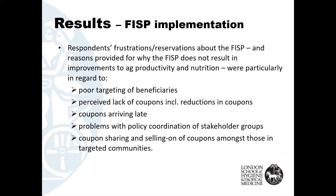Problems with FISP implementation particularly concerned the poor targeting of beneficiaries, a perceived lack of coupons including reductions in their number over time, coupons arriving late, and problems with policy coordination between stakeholder groups. Coupons were also described as often being sold to more wealthy farmers to address immediate financial needs, and the sharing of coupons in communities was considered to dilute the effect of the program.